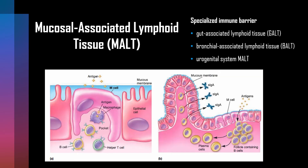Mucosal associated lymphoid tissue (MALT) forms a specialized immune barrier. Examples include GALT (gut associated lymphoid tissue), bronchial associated lymphoid tissue (BALT), and urogenital system MALT. The figure on screen shows the function of M cells in mucosal associated immunity. An M cell is located between two epithelial cells in a mucous membrane; it endocytoses the pathogen and releases it into a pocket containing helper T cells, B cells, and macrophages, where the pathogen is often destroyed.